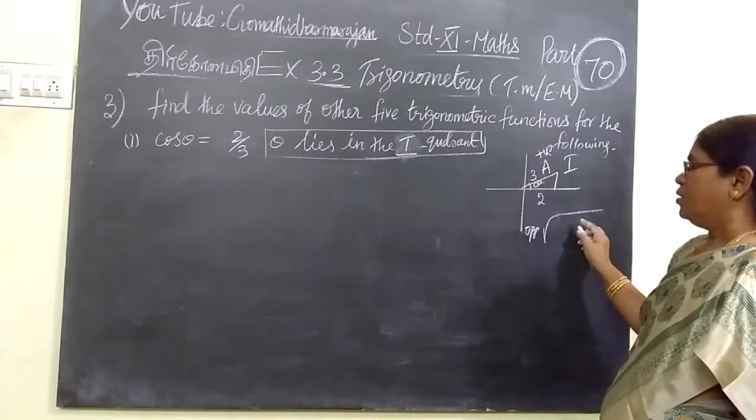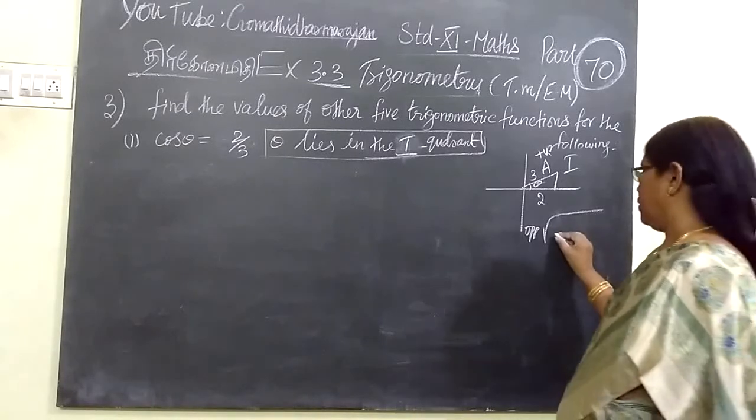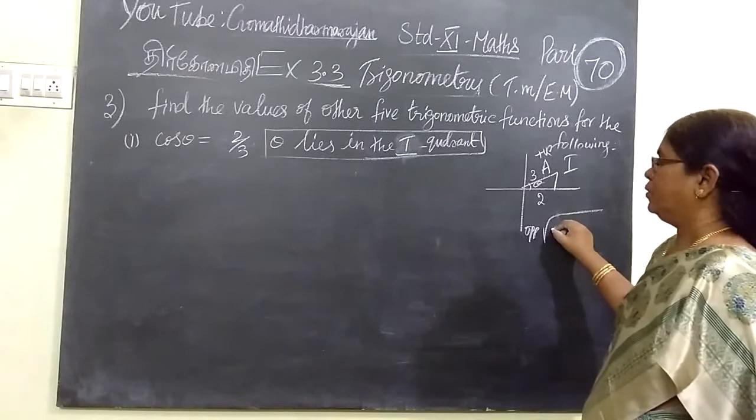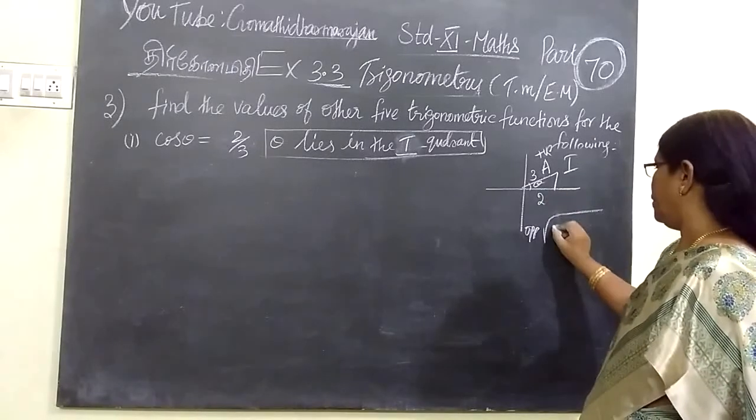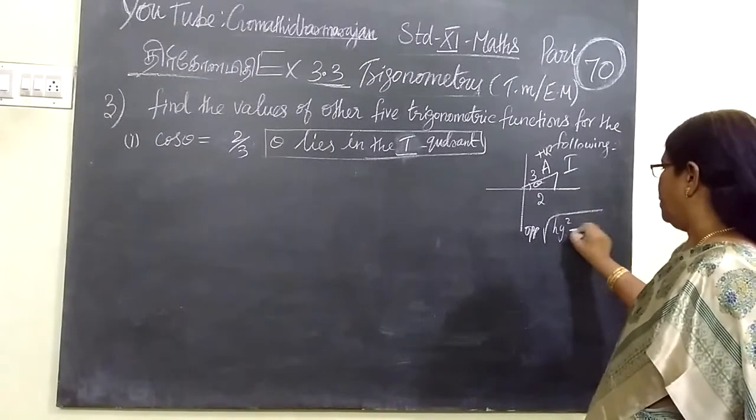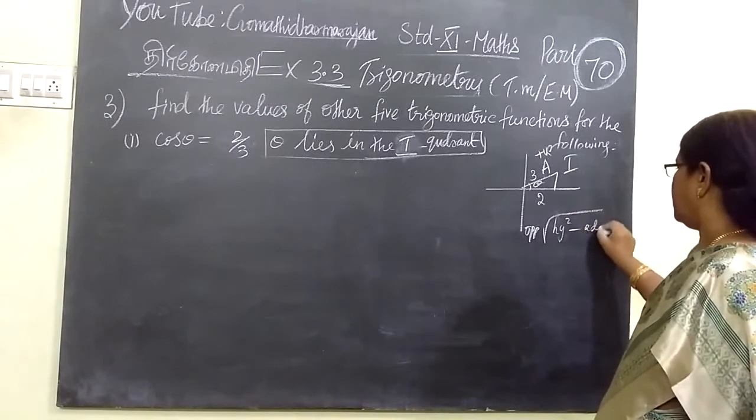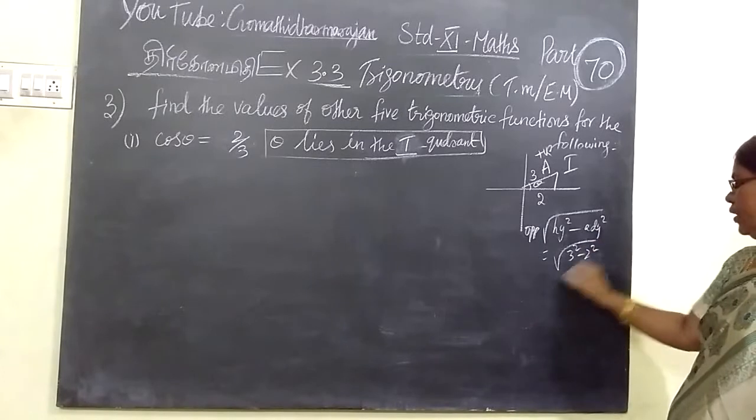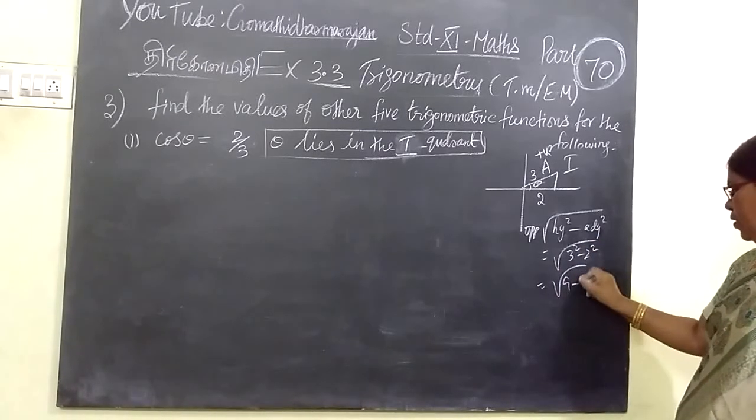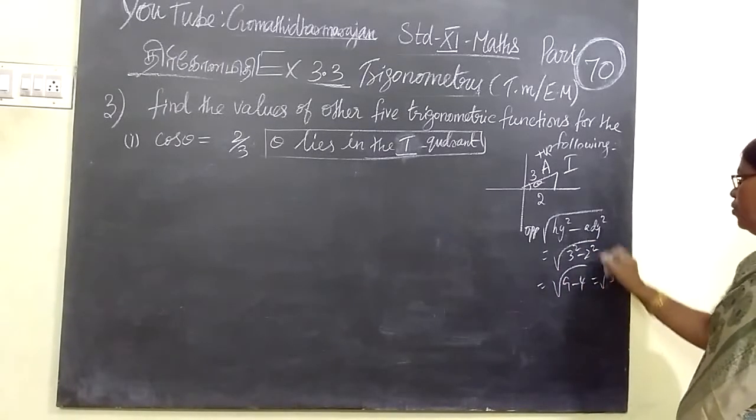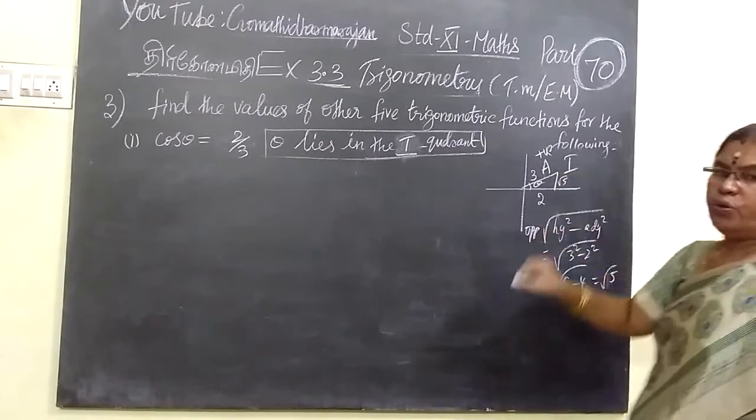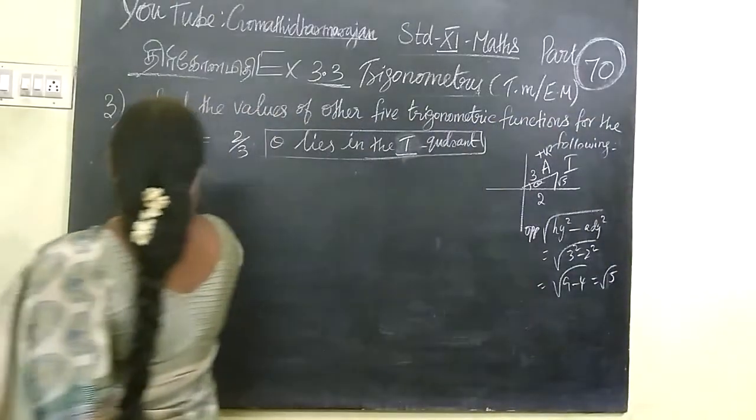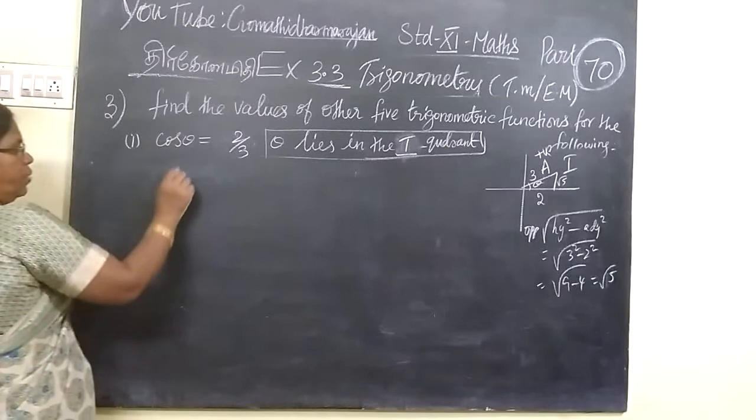So you want to find opposite side. What you write: hypotenuse square minus adjacent square. So hypotenuse 3 square minus 2 square, that is 9 minus 4, that is equal to root 5.